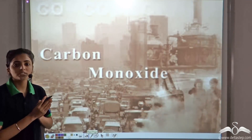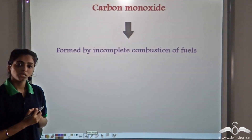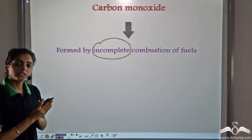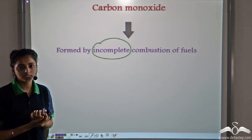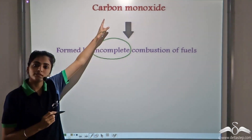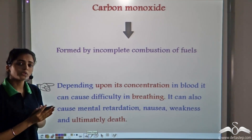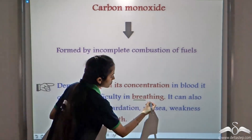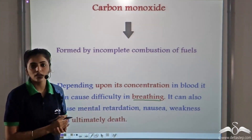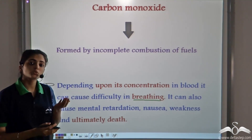Another important pollutant is carbon monoxide, which is a fatal pollutant. It is produced by the incomplete combustion of fuels — whereas complete combustion gives us carbon dioxide, incomplete combustion leads to the production of carbon monoxide. This is a very fatal pollutant. It leads to breathing problems, and depending on its concentration in blood, it causes mental retardation, nausea, weakness, and so on. It is fatal if its concentration in blood increases to a very high level.